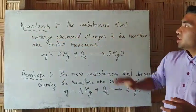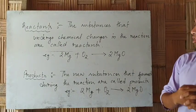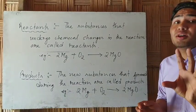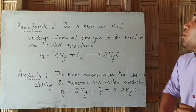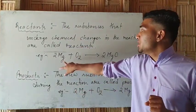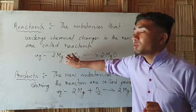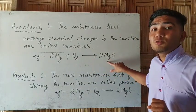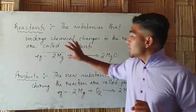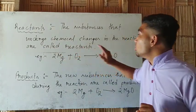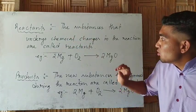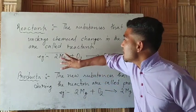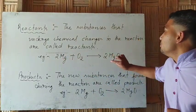The substances that undergo chemical change in the reactions are called reactants. If the chemical reaction happens, the substances that undergo chemical change in the reactions are called reactants. The chemical reaction involves oxygen as a reactant in the reaction.